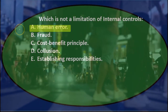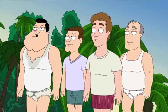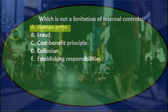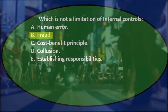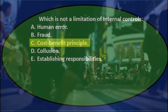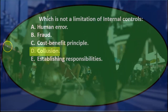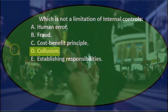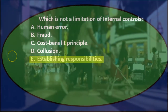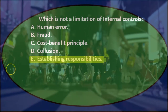The answer choices are: A. Human error. B. Fraud. C. Cost-benefit principle. D. Collusion. And E. Establishing responsibility.